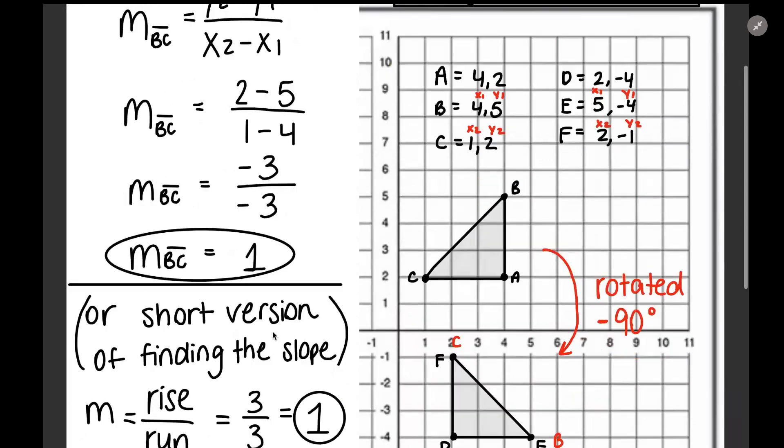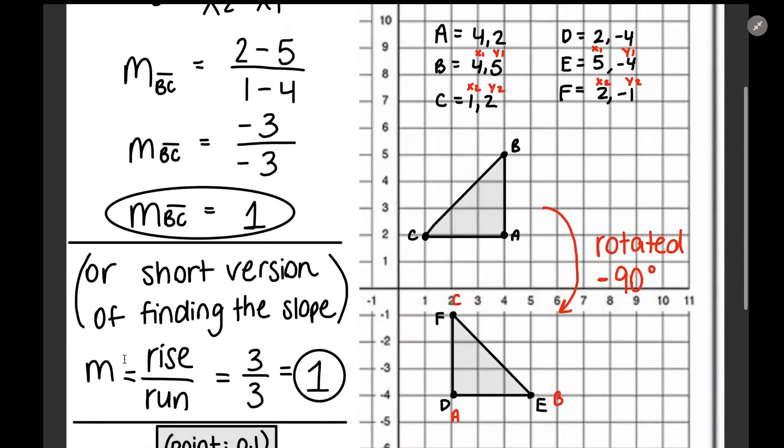You could have done this a short version. Basically slope is always rise over run. So if you go from here and you rise up to B, you're going to rise up 1, 2, 3 places. And if you run, you're going to run 1, 2, 3. So you get 3 over 3 which is 1. So this is a shorter version to do.